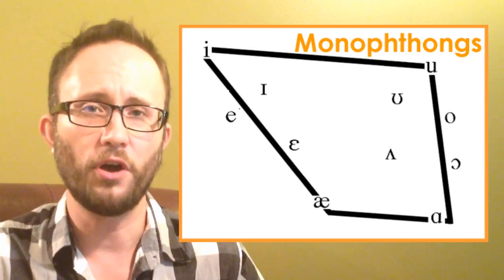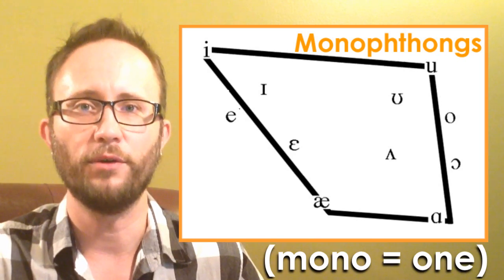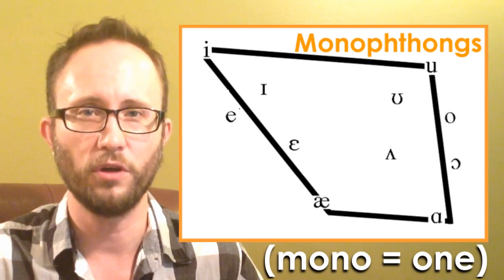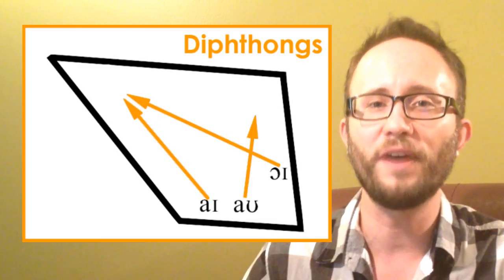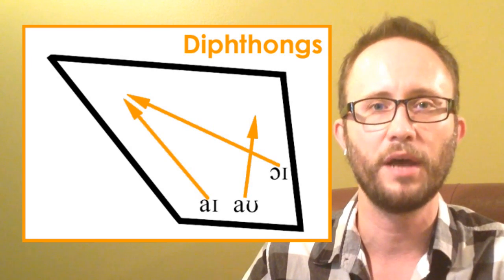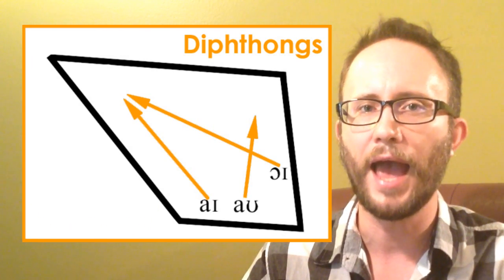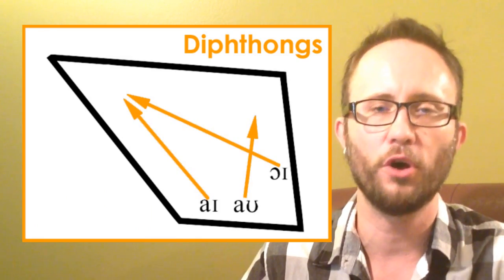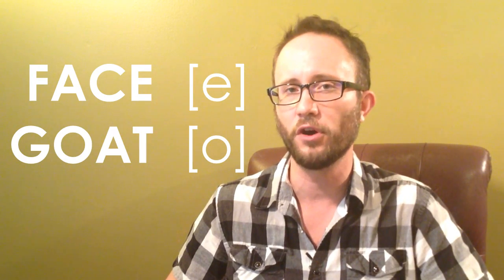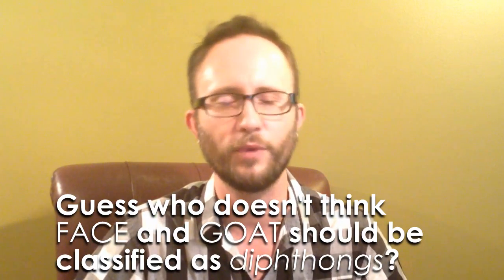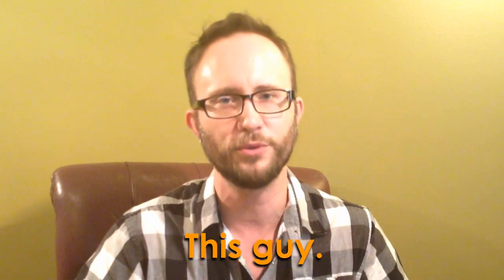Finally, we can talk about the difference between diphthongs and monophthongs. Monophthongs are a single sound — all the vowels we've been talking about so far are monophthongs, also called plain vowels. Diphthongs, on the other hand, are vowels that move throughout your mouth as you're saying them: I, OI, OW — those are our three major diphthongs in English. Some people consider the face and goat vowels to also be diphthongs, because the way English speakers produce these sounds, they move a lot more than in other languages. These things vary slightly from one speaker to another.